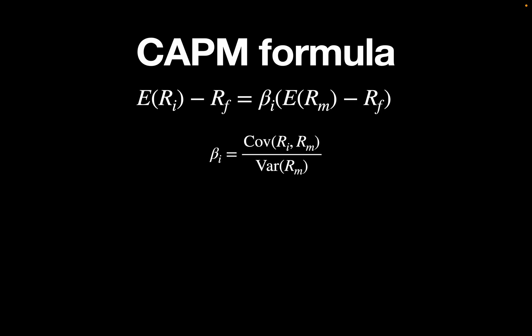A beta between 0 and 1 would mean the asset is moving in the same direction as the market but to a lower extent than the market. A negative beta would mean that the asset is moving inverse to the market.